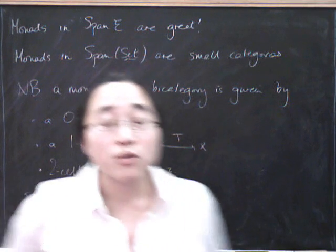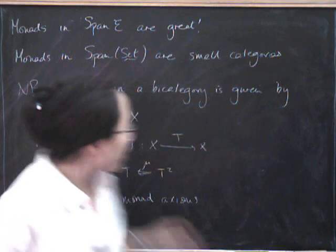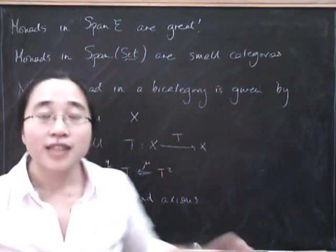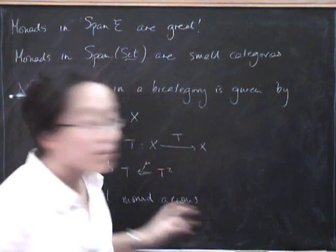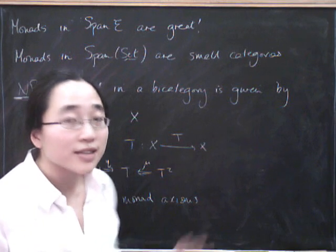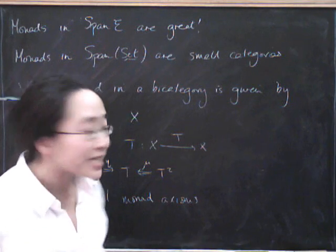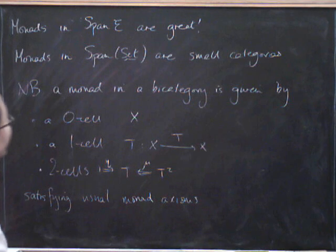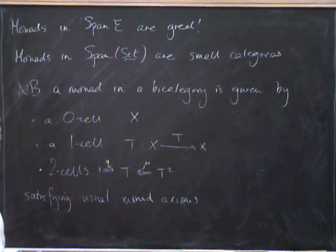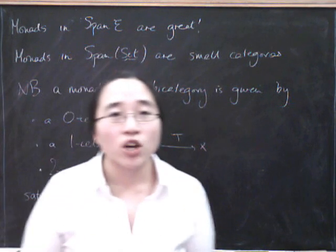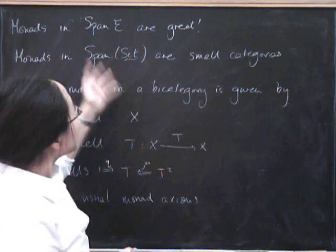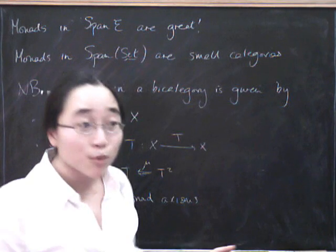If I'm going to be really honest, which I suppose I ought to, the usual monad axioms have to be slightly modified. You have to stick in some associators here and there to make things make sense inside a bi-category. But basically, it's exactly the same as the usual monad axioms. So what we're going to do next time is show why a monad in this bi-category is precisely a small category.